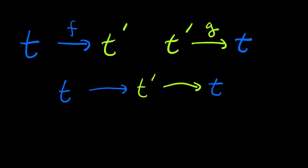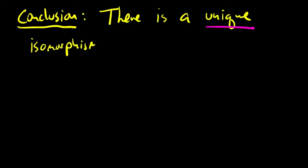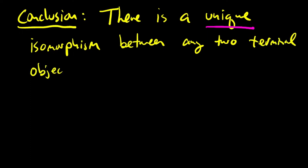In order to show that, you can compose the map from t to t prime with the map from t prime to t to get a map from t to t. That composition must be the identity, because we always have the identity map from t to t, and because t is a terminal object, that map is unique. Therefore, any map from t to t itself must be the identity — in particular, the composition of the map from t to t prime and t prime to t. In the same way, the composition in the other order must be the identity on t prime. Thus, we're able to conclude that there's a unique isomorphism between any two terminal objects.